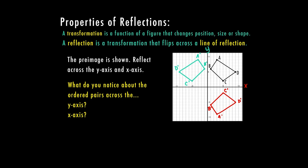Now let's look at what you notice about the ordered pairs when we cross the y-axis and the x-axis. Looking at point A: the original is at (3, 9). For the y-axis reflection in green, my ordered pair is at (−3, 9). So when reflecting across the y-axis, the x is opposite and the y stays the same.